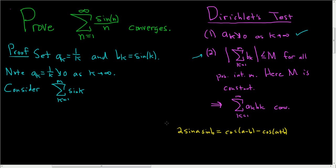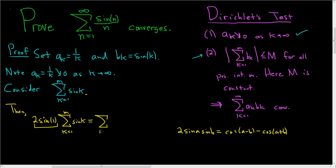Why did I decide to use this identity? Well, here we have sin(k), but we only have one sine. We can always multiply by another sine function. I decided to multiply by 2 sin(1) — the choice of sin(1) is pretty arbitrary. Since 2 sin(1) is a constant and does not depend on the index of summation, we can bring it inside the sum. This gives us the sum as k runs from 1 to m of 2 sin(1) sin(k).